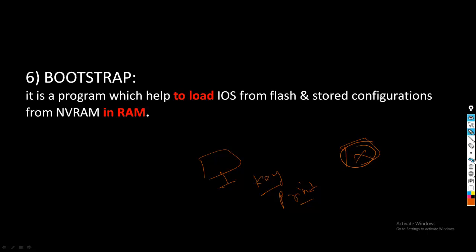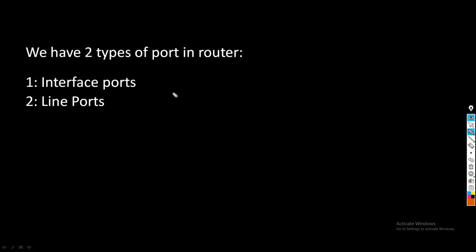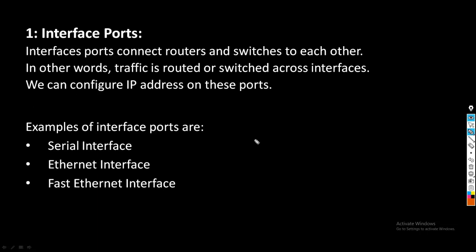Just like in computers we have ports to attach keyboards, printers, mouse, etc., the same way in a router we also have ports. There are two types of ports in a router: one is interface port and another one is line port. Interface ports connect routers and switches to each other — in other words, traffic is routed or switched across interfaces.